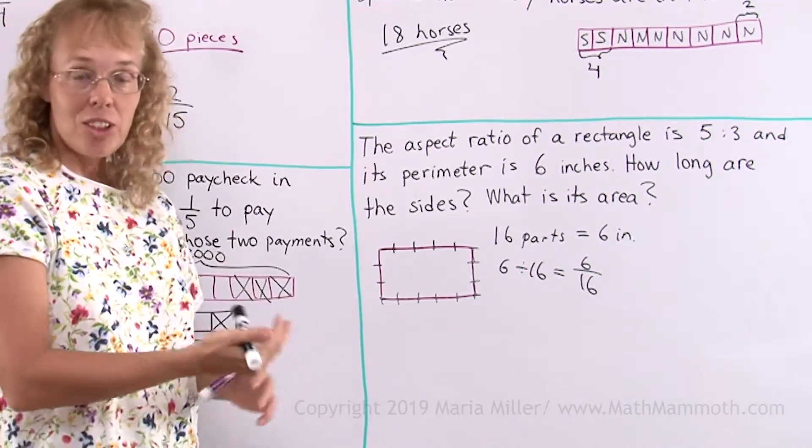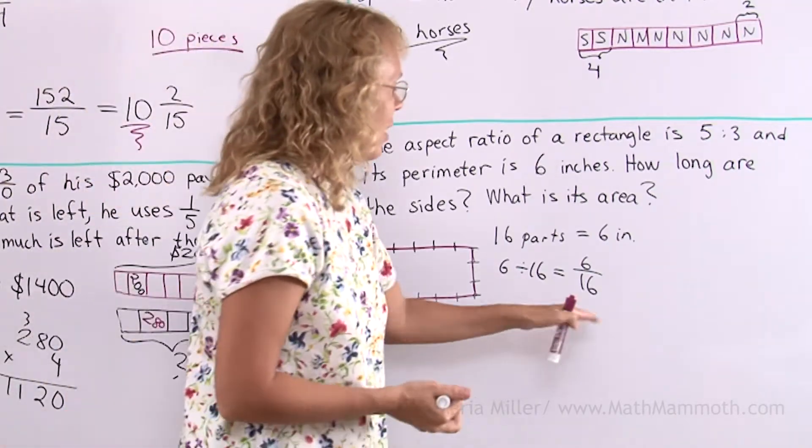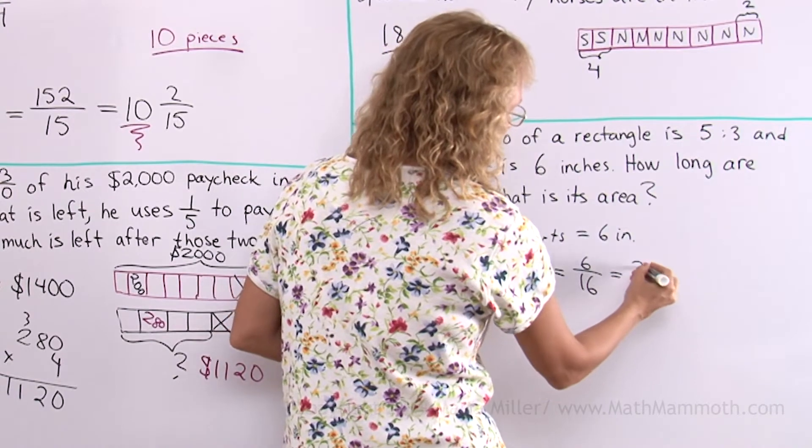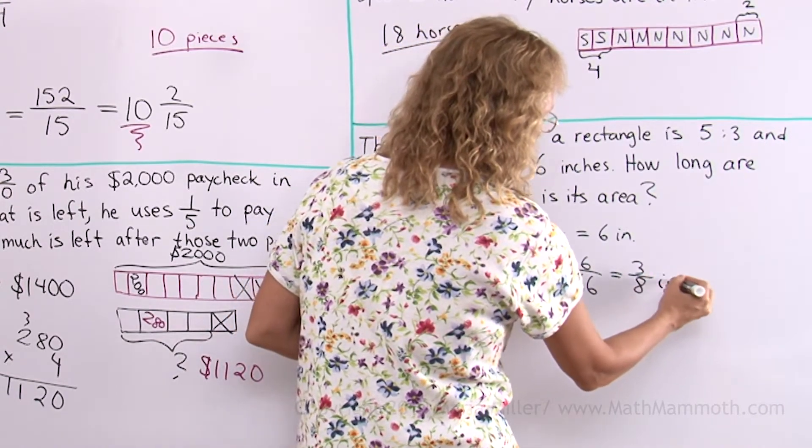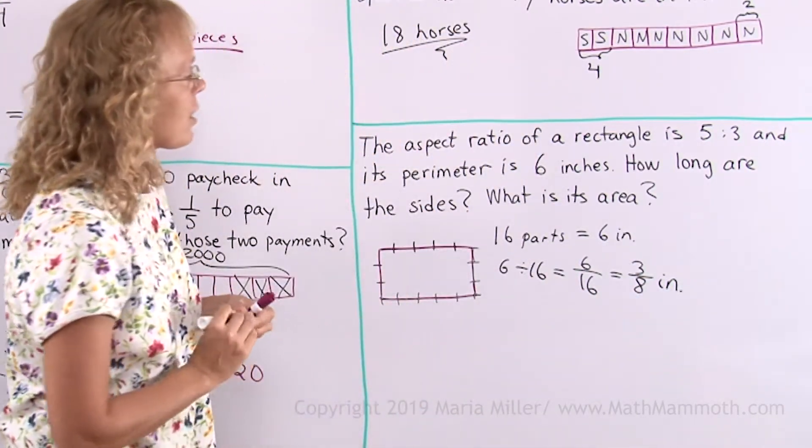That's how whole number division works. This time, I can simplify this to 3 eighths. Alright, 3 eighths of an inch.